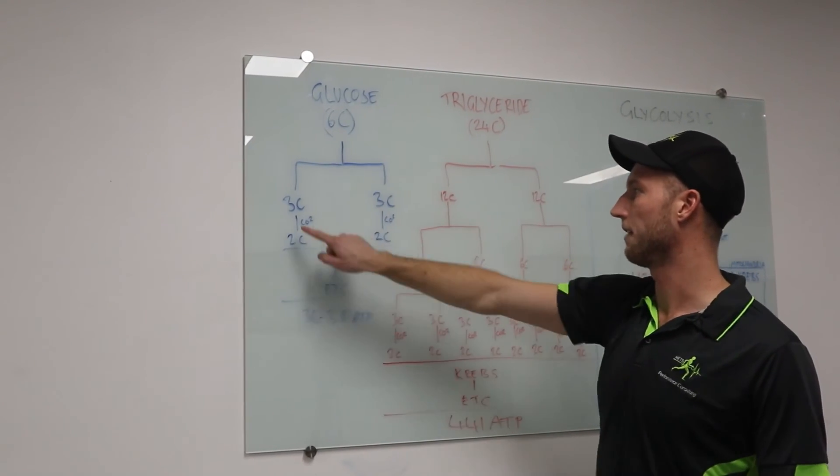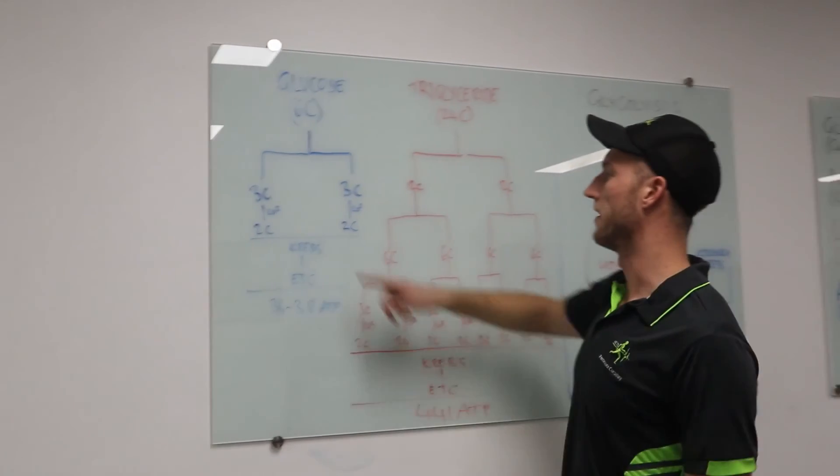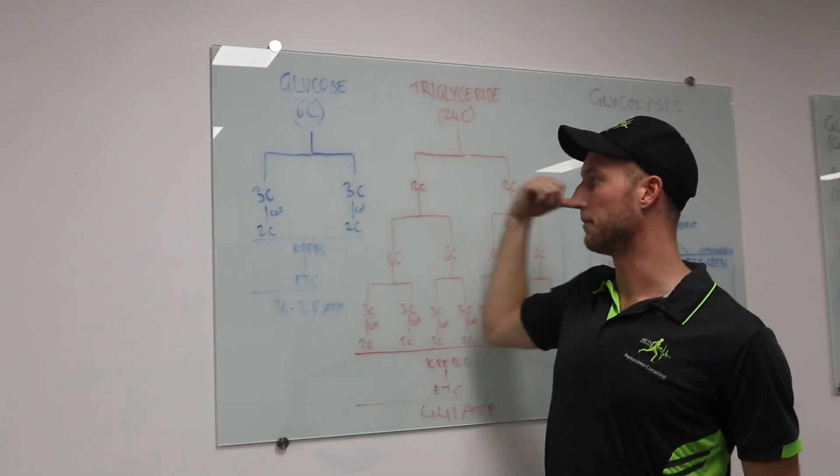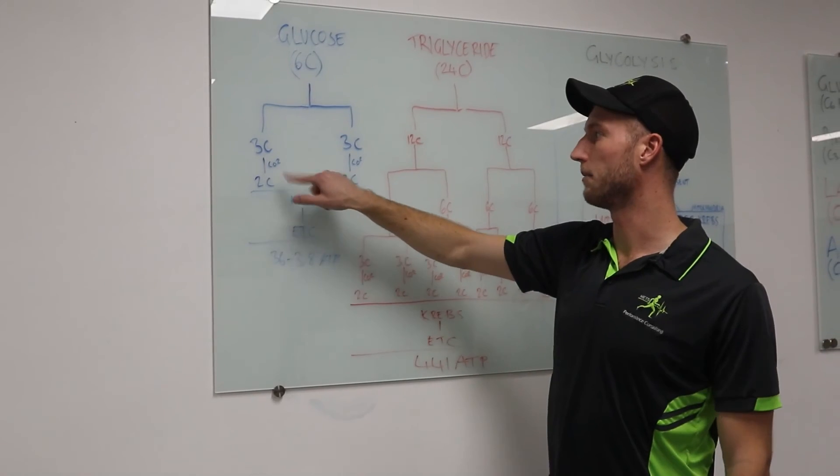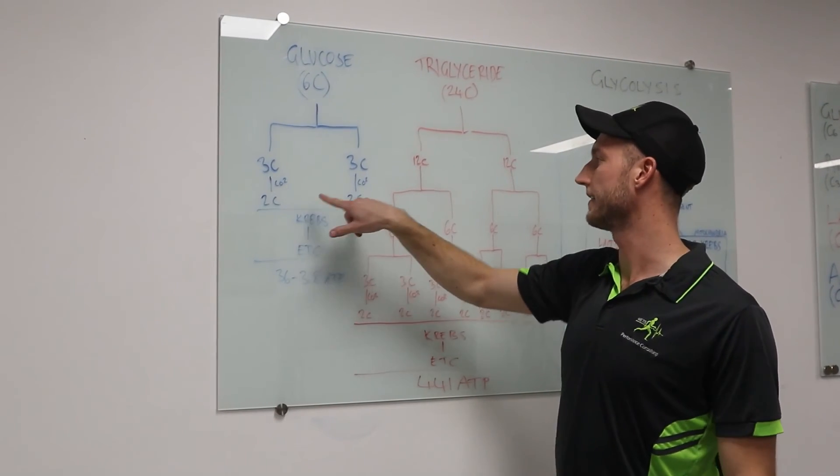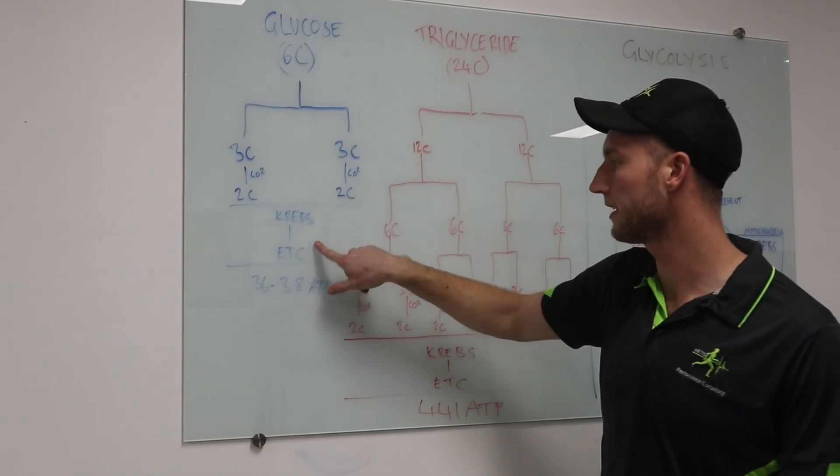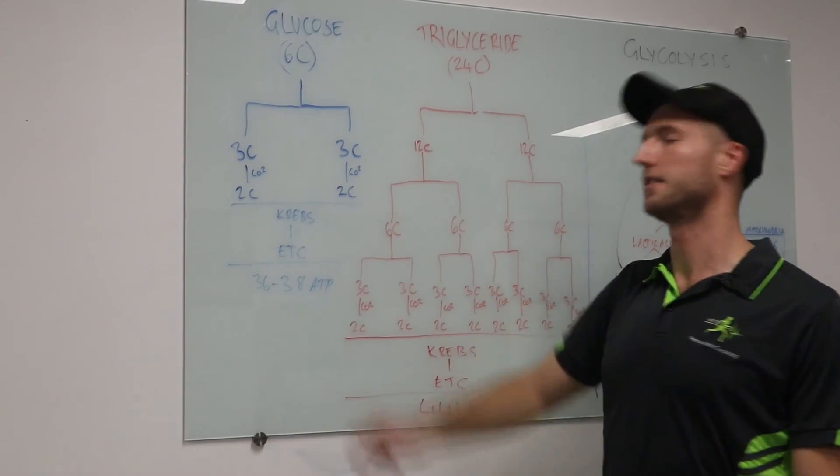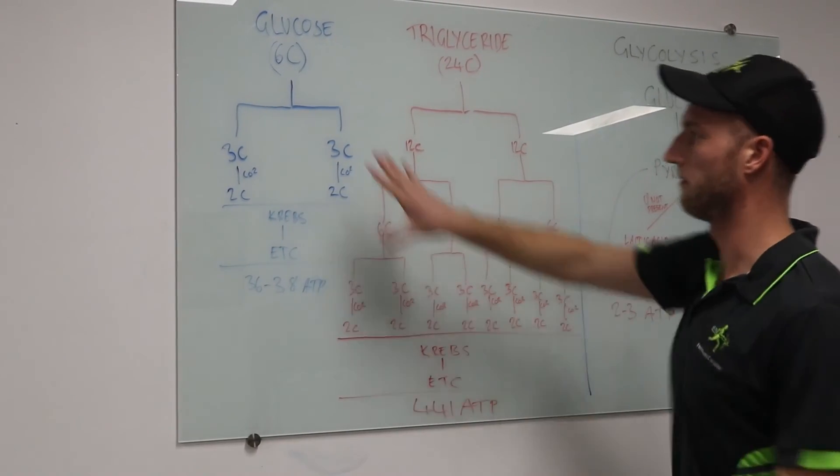So when we're looking at glucose, it's pretty straightforward. Split six in half, we get three and three. Cool. We then, as we said before, same as over there, CO2. Let's get rid of one of the carbon through oxidation. CO2, we get to the two-chain. That can then go into the Krebs cycle, the electron transport chain, and we get 36 to 38 ATP. Fairly straightforward.